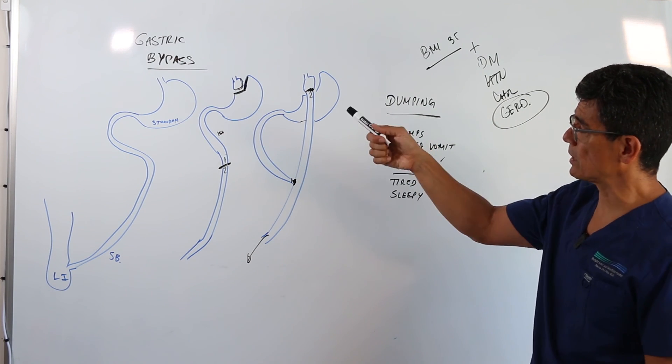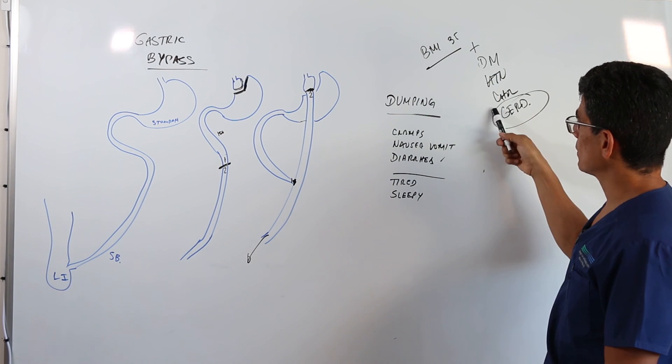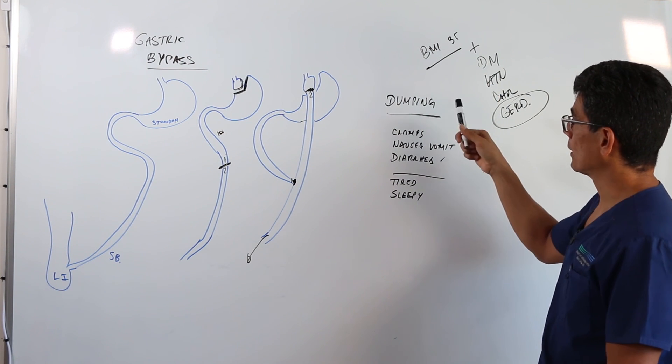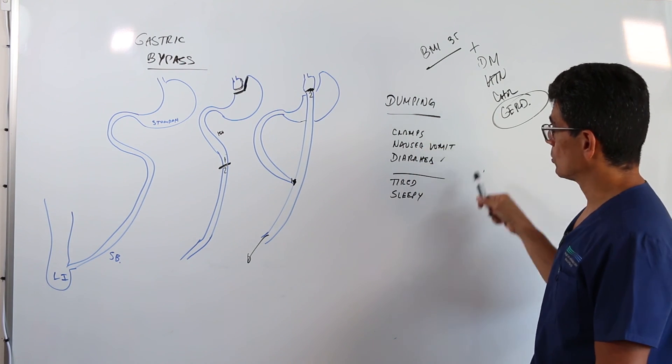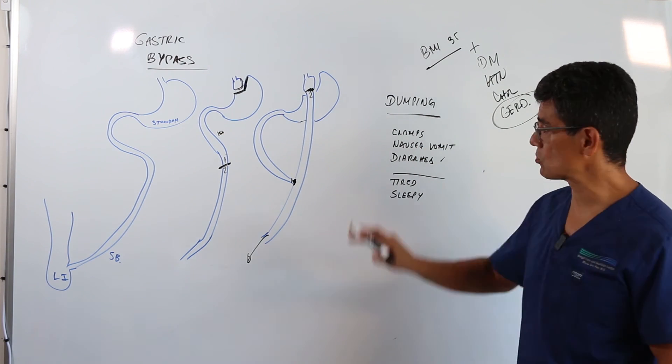So gastric bypass, excellent operation for weight loss and fixing medical problems, reflux disease especially. Side effects, you have to be good at avoiding sweets because otherwise you're going to get side effects and those we call dumping.